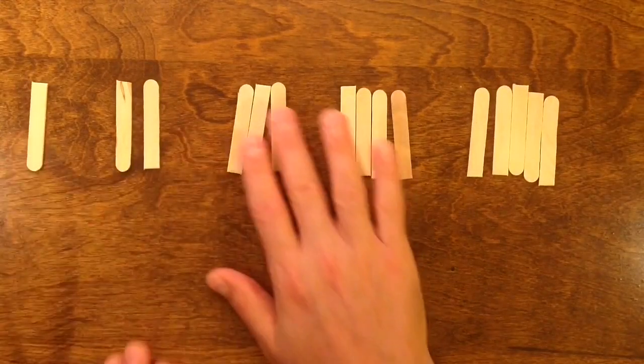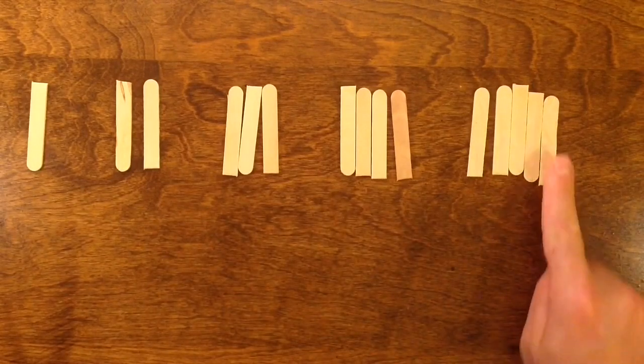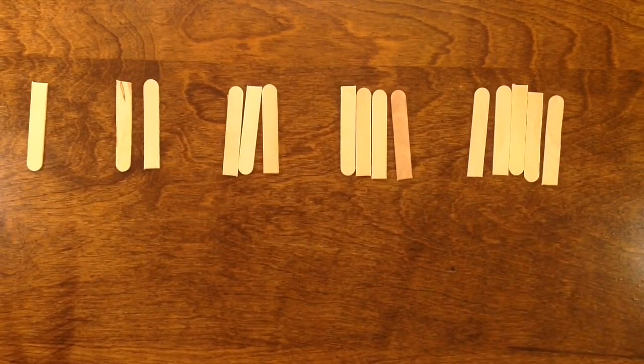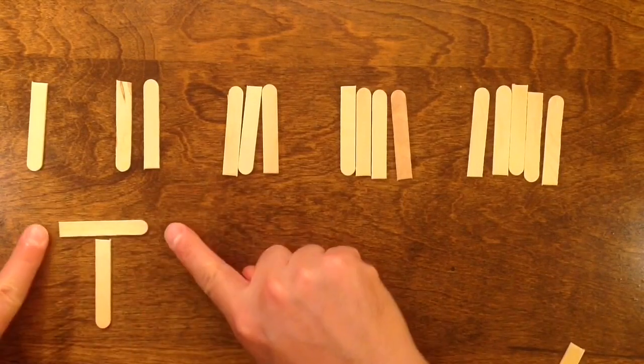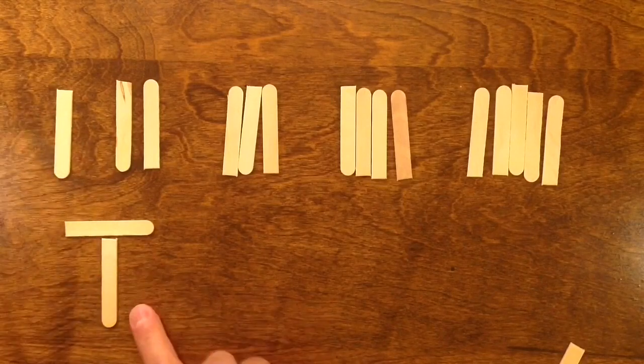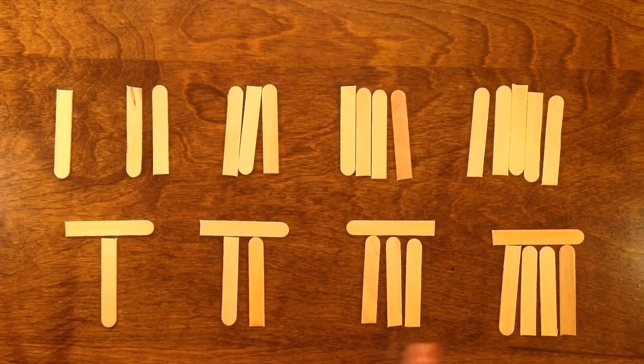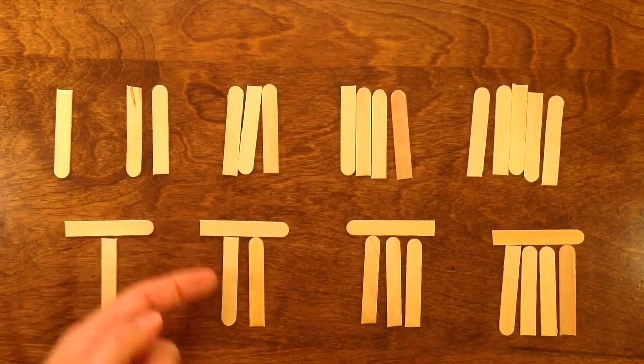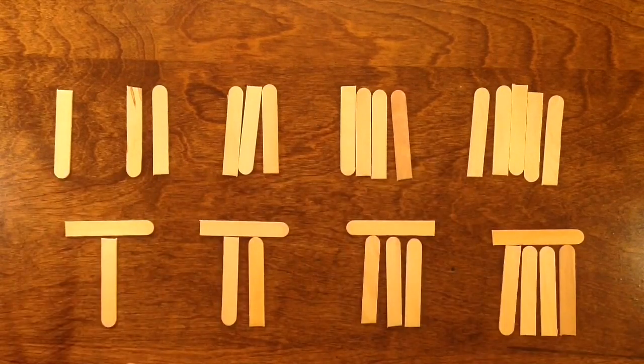So to recap, let me just mention, we can represent the numbers 1, 2, 3, 4, and 5 with vertical rods, and then when we get up to 6, we're going to use a horizontal rod to represent a group of 5, and then the vertical rod represents 1 more. And then in a similar way, we can represent 7, 8, and 9 with groups of 5, and then 1 more. So these are all one-digit numbers.